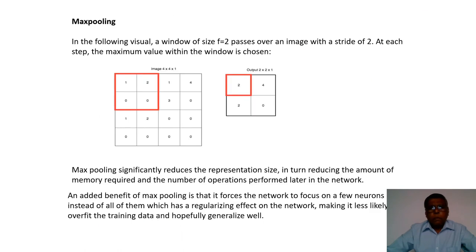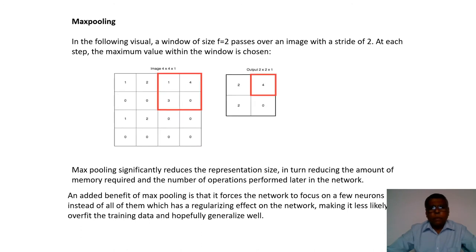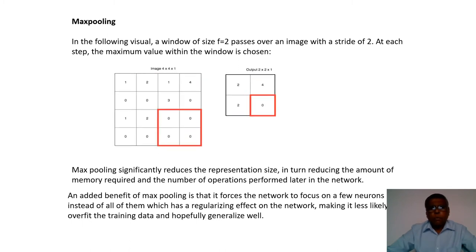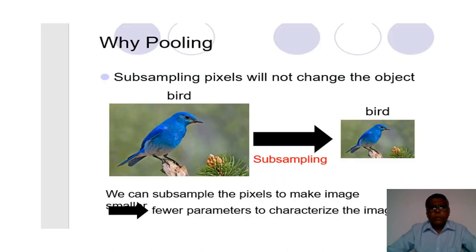The pooling operation reduces dimensionality. For example, max pooling takes a 4×4 area and selects the maximum value. With a stride of 2, a 4×4 area becomes 2×2, so the image is reduced without significantly reducing quality. This is called subsampling or downsampling. The idea is that in subsequent layers we have a smaller number of parameters — otherwise deep neural networks would have a very large number of parameters.